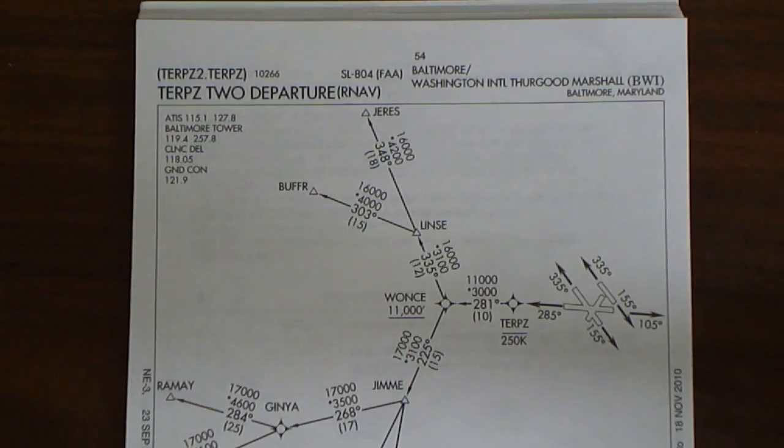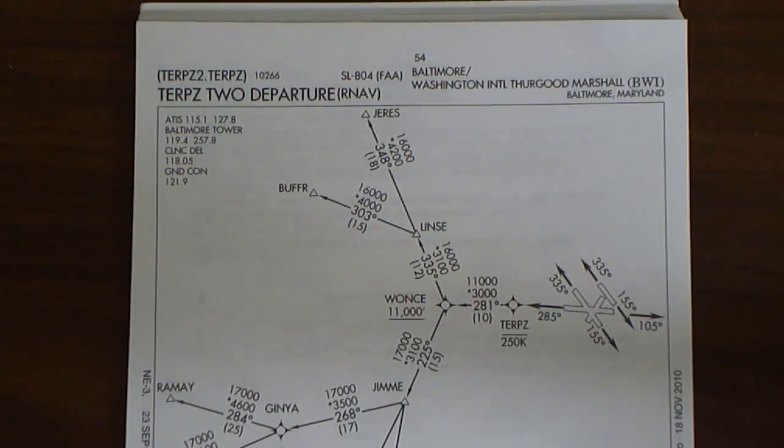In this example, I'm going to look at the Terp Z2 departure for the Baltimore Washington International Airport. Go Terps!